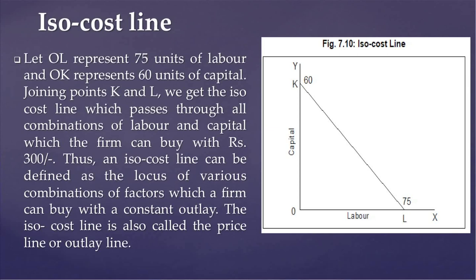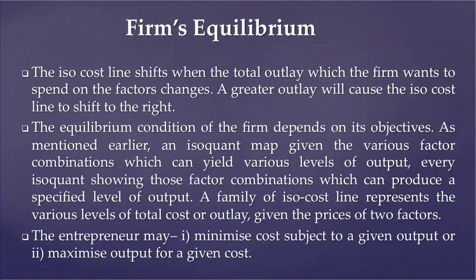The isocost line is also called the price line or the outlay line. The isocost line shifts when the total outlay which the firm wants to spend on the factors changes. A greater outlay will cause the isocost line to shift to the right.